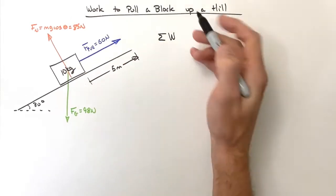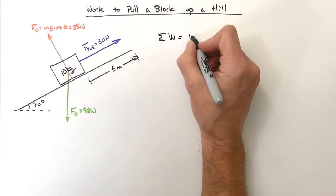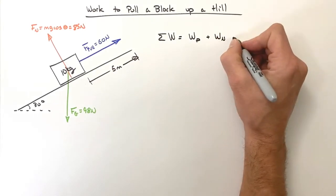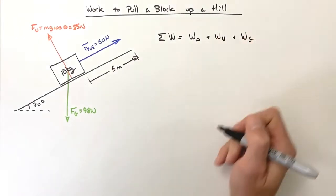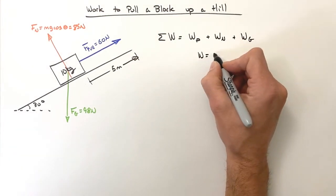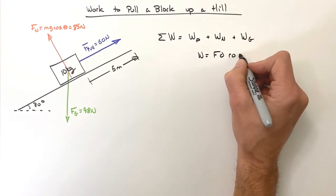That means we're going to have to figure out the work done by each force individually. We've got the pull force plus the work by the normal force plus the work by gravity. Of course we're going to be using our work equation: work is F d cosine theta.